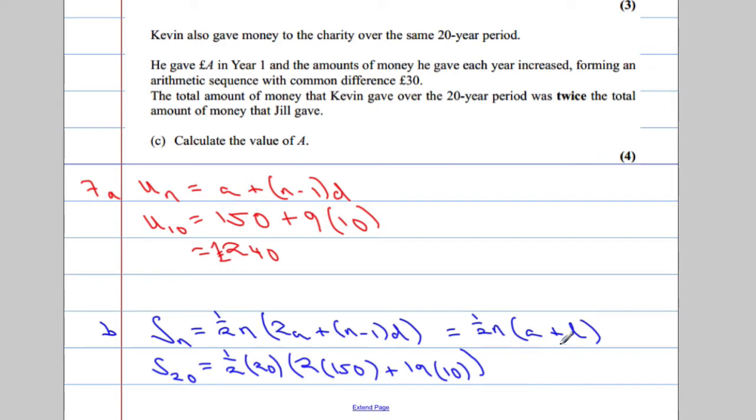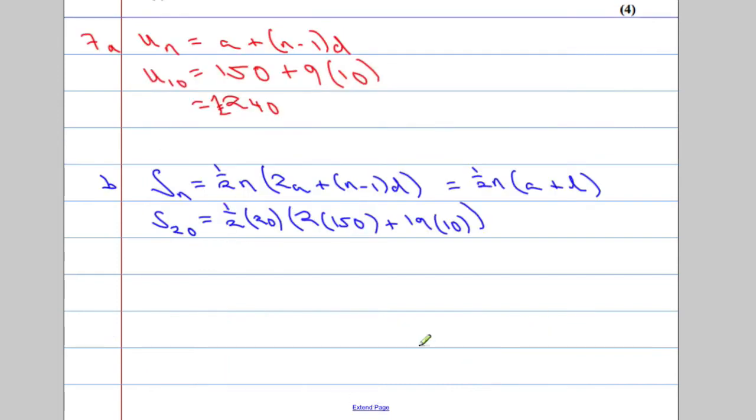Close that bracket, and close off the overall bracket. I chose not to use the second formula because I don't know the last term. I could have worked it out, but I'm going to use the information I had. Now, let's just see if we can tidy this up. 1 half times 20 is going to be 10. 2 times 150 is 300. That's going to be 190, and adding them together, 300 and 190 is going to give us 490.